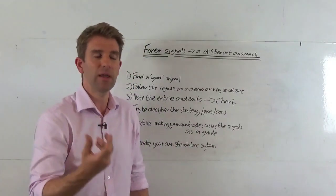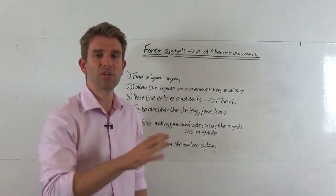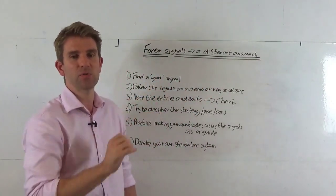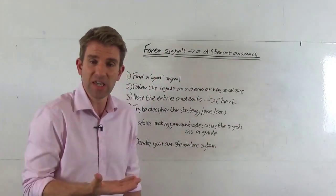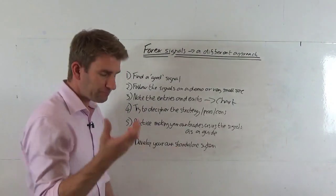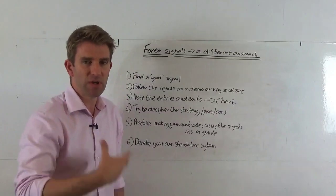And you can start to learn from it and just start to say, okay, this is not a bad little strategy. This guy's waiting for a breakout, a four bar pullback, and then buying, always waiting for this, always waiting for that. And you can start to see what's working for yourself. And so then the next step is, once you've deciphered a little bit of the strategy and the approach, is to start making your own trades using the signals as a guide.